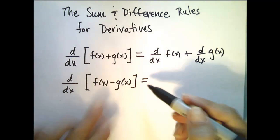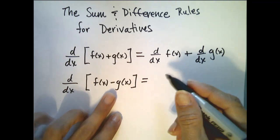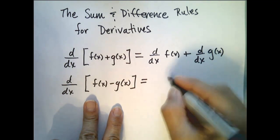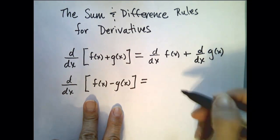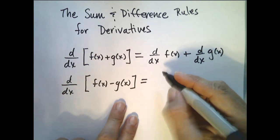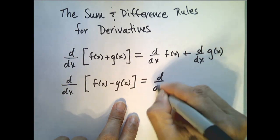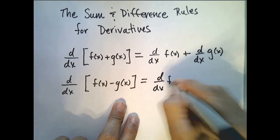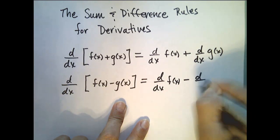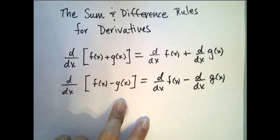Likewise, since the difference is really just a special case of the sum, the derivative of the difference of two functions equals the difference of the derivatives. So the derivative of f minus g equals the derivative of f minus the derivative of g.